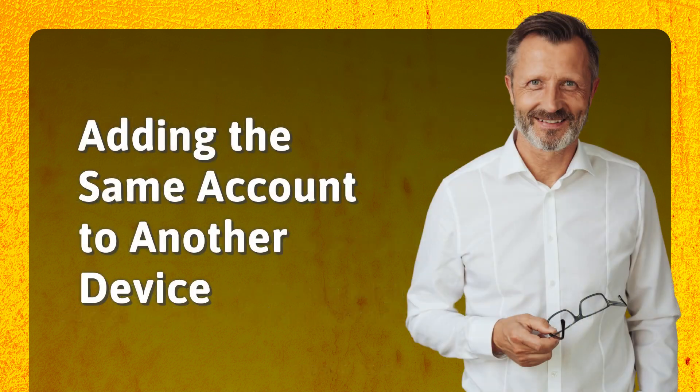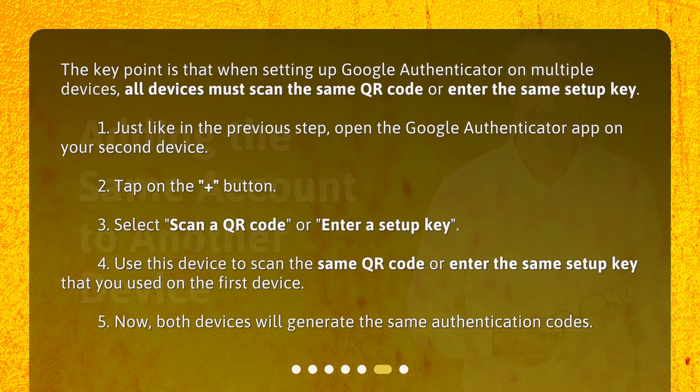Adding the same account to another device. The key point is that when setting up Google Authenticator on multiple devices, all devices must scan the same QR code or enter the same setup key. 1. Just like in the previous step, open the Google Authenticator app on your second device. 2. Tap on the plus button. 3. Select scan a QR code or enter a setup key.